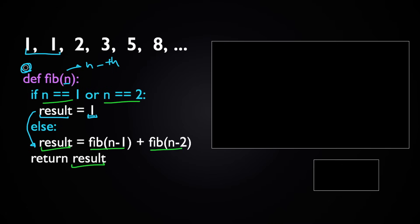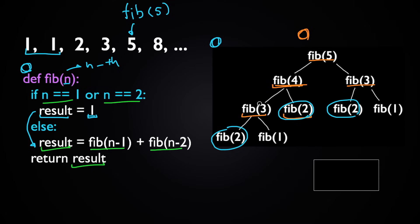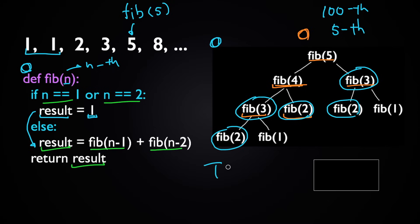The solution works, but it's very inefficient. To see why, let's look at the example of finding the fifth Fibonacci number by calling fib(5). To find fib(5) we need to compute fib(4) and fib(3). To find fib(4) we need fib(3) and fib(2), and so on. Looking at this diagram, you'll notice we compute fib(2) three times and fib(3) twice. It's not a big deal for small numbers, but for the hundredth Fibonacci number, the time grows exponentially — roughly in the order of 2 to the power of n.